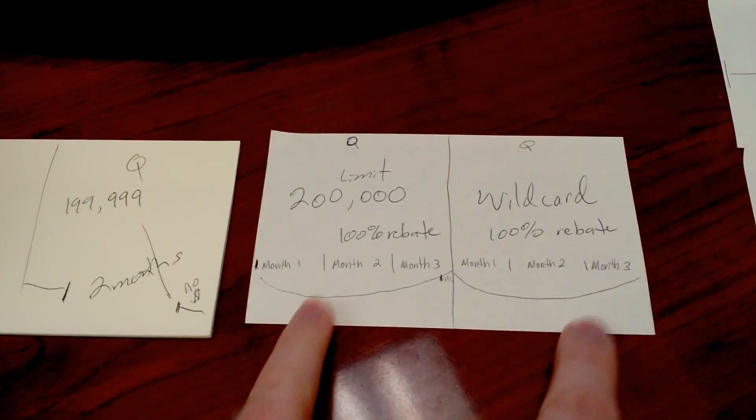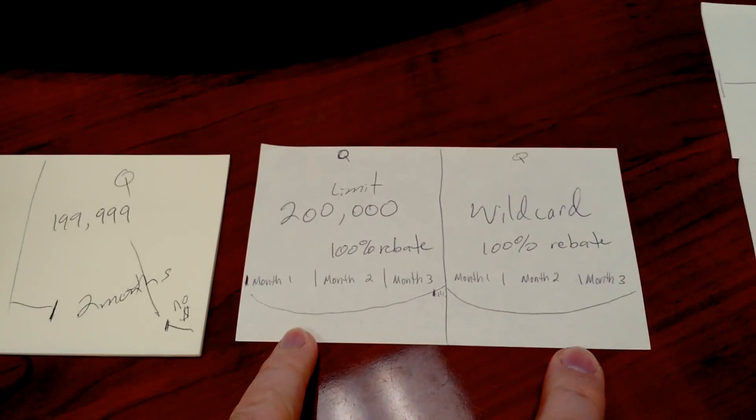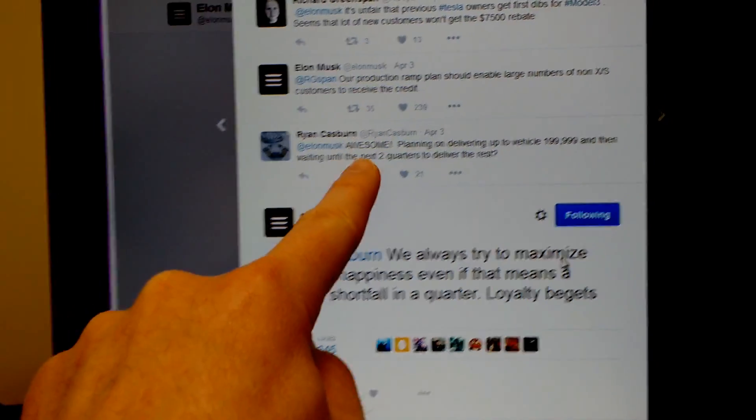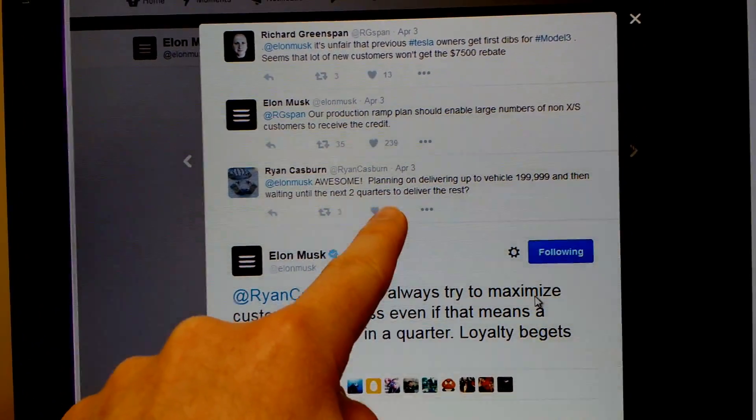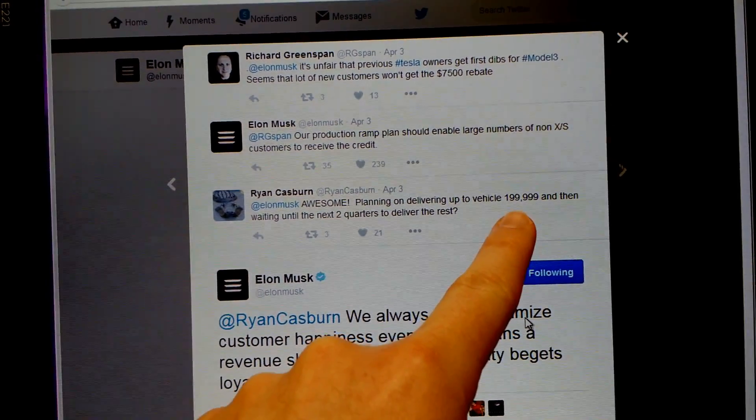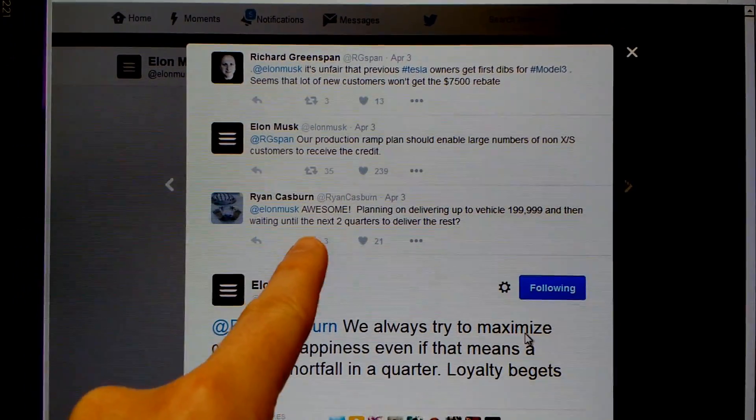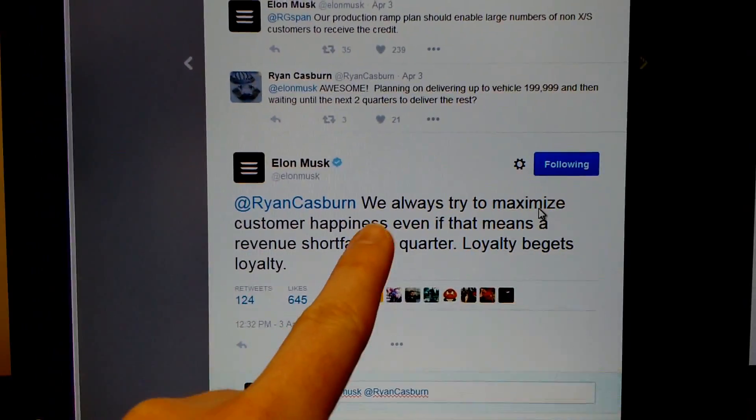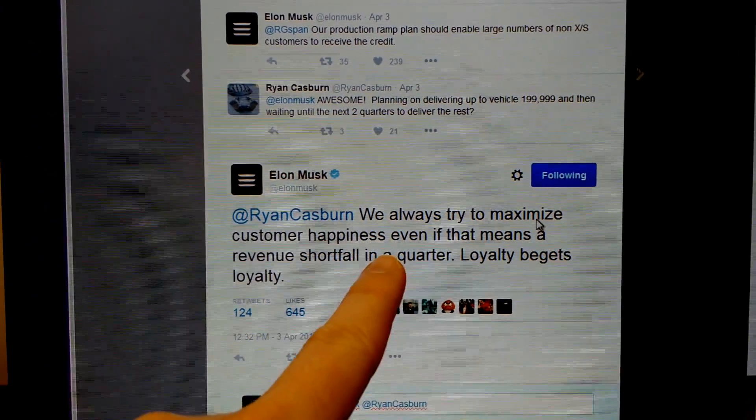Somebody replied to that and said are you planning on delivering up to vehicle 199,999 and then waiting until the next quarter to deliver the rest? His response was we always try to maximize customer happiness even if that means a revenue shortfall in a quarter.